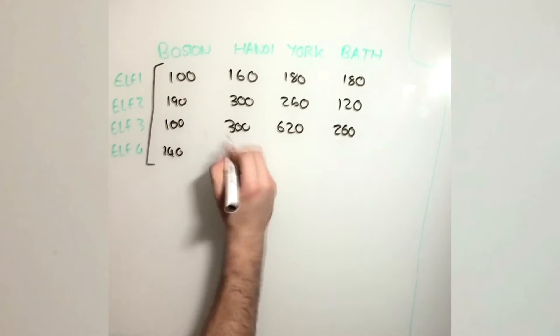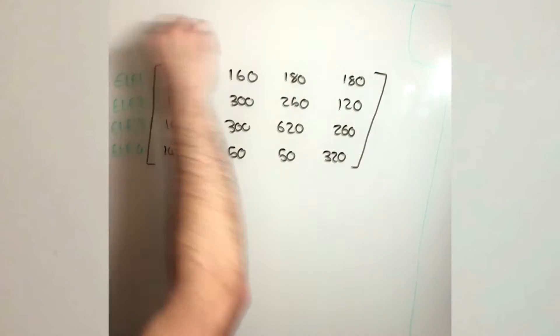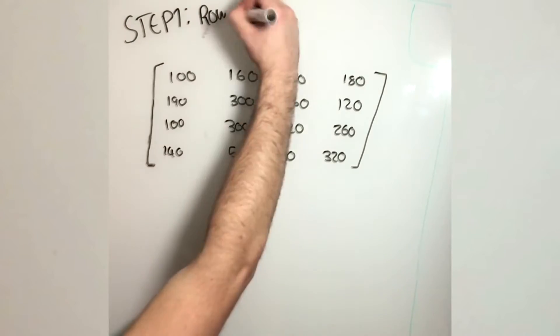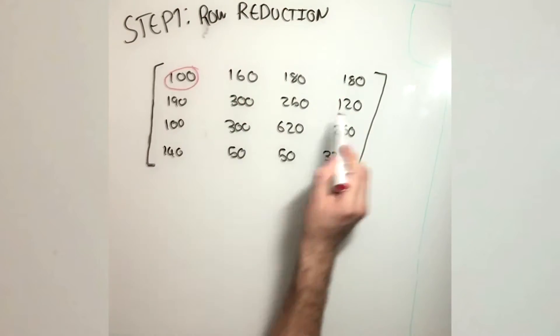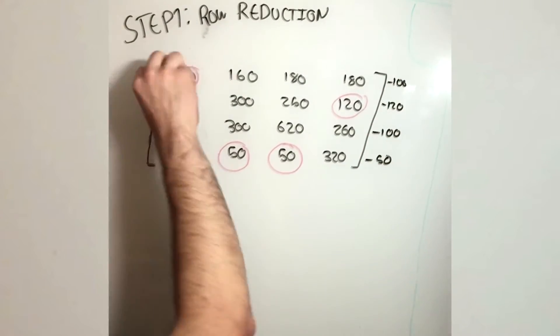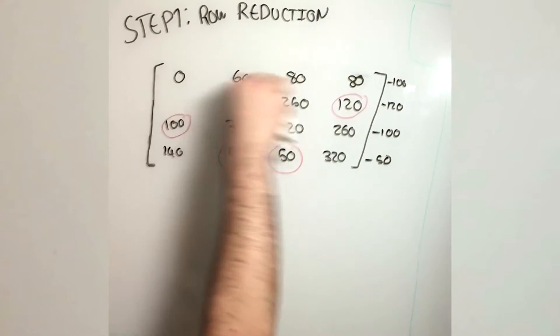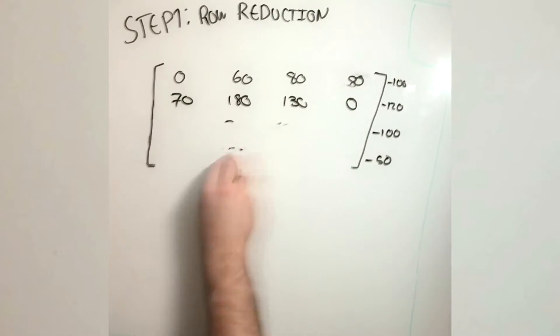So similar to the first example, we perform the same steps. For step 1, we do row reduction. So for row reduction, you want to circle the smallest value in each row. And then we subtract each row by each of its smallest value.